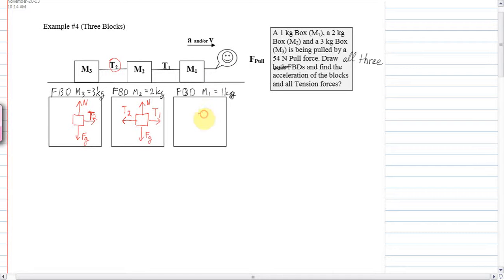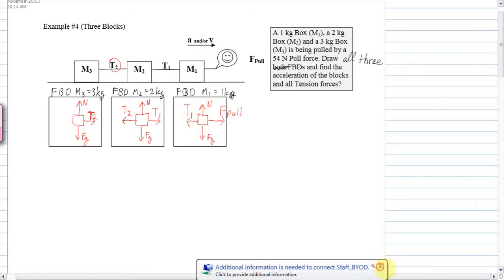M1, the free body diagram for that one. We have the normal up, the force of gravity down. We have the pull force this way, so F pull, we could call it the applied force if we want to. And T1 is pulling back. Those are the free body diagrams.